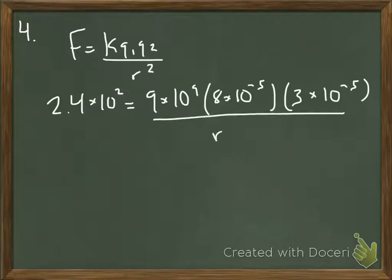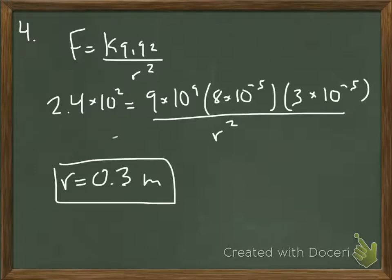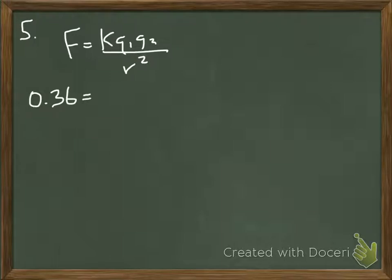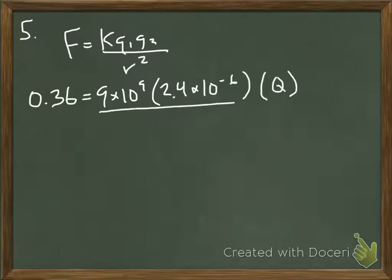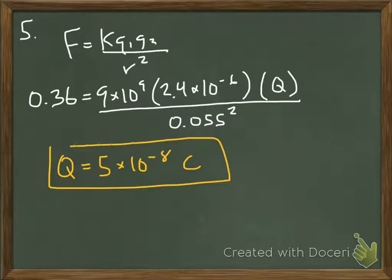We are given the force here, we're given the charges, we're solving for R squared. I saw a lot of math errors on this one in class. Make sure that you are taking the square root at the end. A common error in this question was the microcoulombs. That little Greek U means times 10 to the negative 6. And don't forget to put your centimeters into meters. And don't forget to square the denominator.